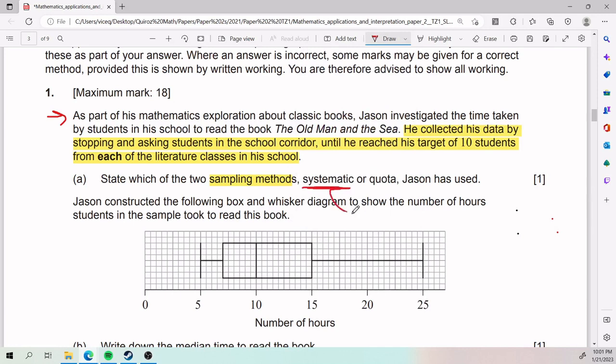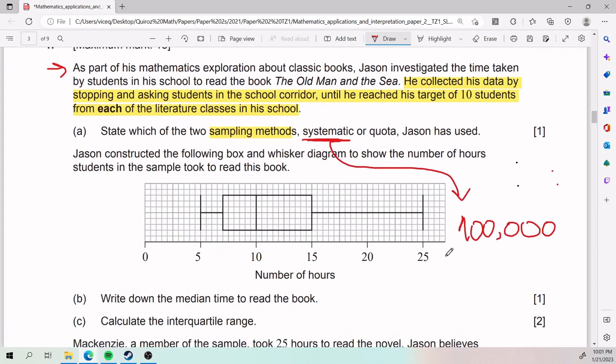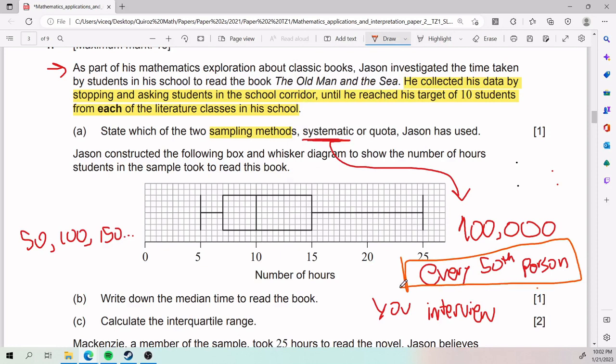Systematic, the way it works is like, let's say you have a population of 100,000 in a city and you will choose that every 50th person you interview them. That means you interview the person number 50, the person number 100, the person number 150, and so on and so forth. So that would be systematic. The key thing about systematic here is that it's every X amount of people.